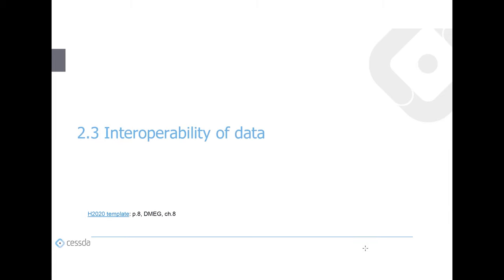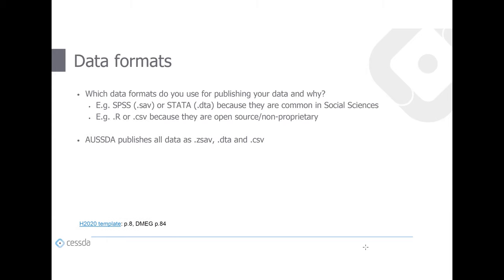The third aspect of FAIR data is interoperability. Regarding data formats, the questions are: which formats do you use for publishing your data, and why? You could publish in SPSS or Stata files because these are most common in the social sciences, or publish in CSV or R format because these are open source and non-proprietary. By the way, AUSTER publishes all research data in formats readable by both SPSS and CSV, and the AUSTER staff will do this conversion for you.